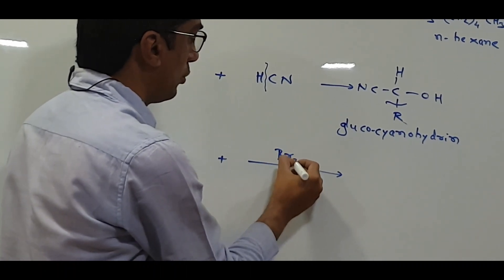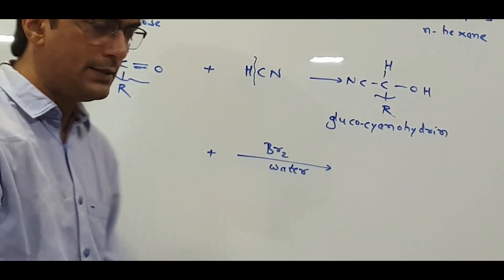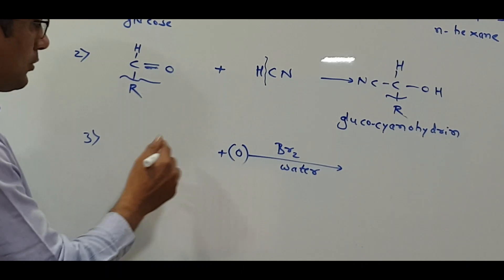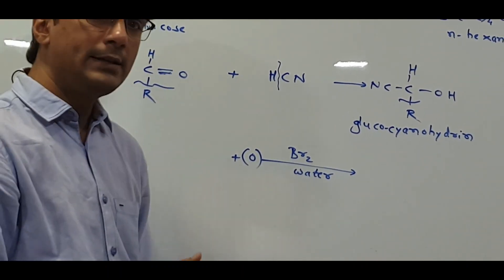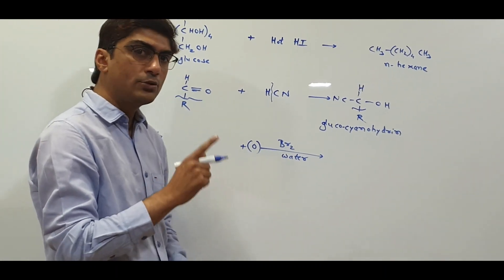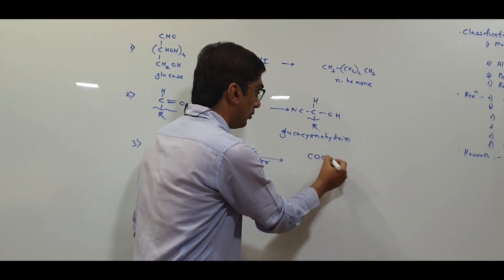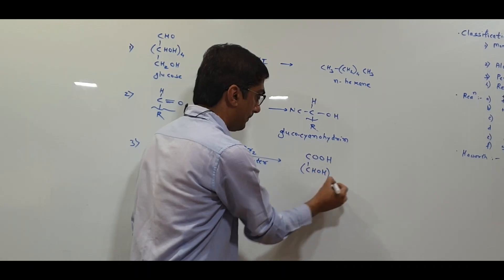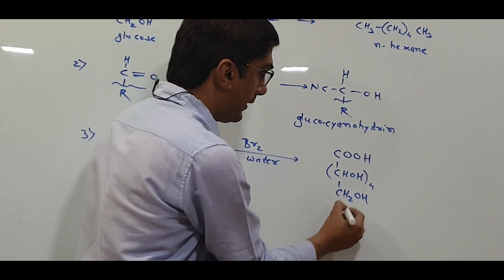The next reaction is with bromine water, which is a mild oxidizing agent. The oxygen from bromine water will oxidize the aldehyde group but will not oxidize any of the alcohol groups present in glucose. It is important that it oxidizes only the aldehyde group. So the aldehyde will be oxidized to a COOH group while the remaining structure stays the same. This product is called gluconic acid.